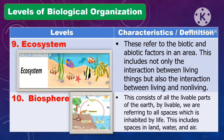Another level of biological organization is the ecosystem. This refers to the biotic and abiotic factors in an area. This includes not only the interaction between living things, but also the interaction between the living and the non-living. Another level is the biosphere, which consists of all the livable parts of the Earth — all spaces inhabited by life, including land, water, and air.